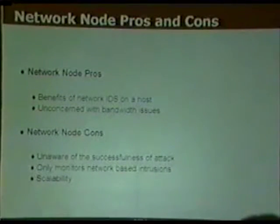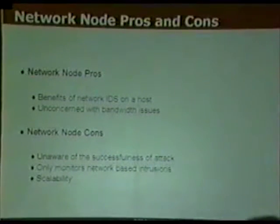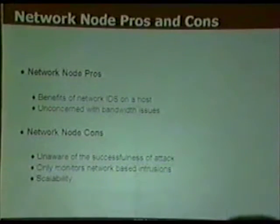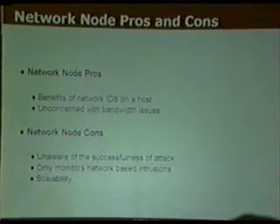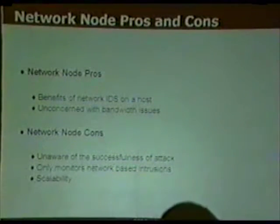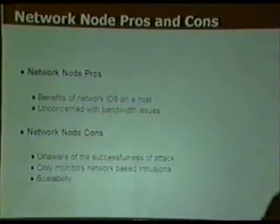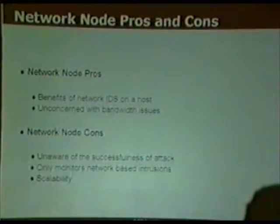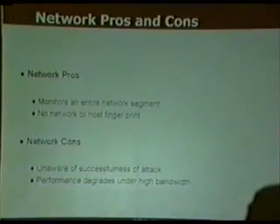The pros of network node IDS include getting network-level detection at the host and no bandwidth concerns since it's not watching the entire network. Depending on where encryption occurs in the stack, you may be able to work around some encryption. The cons are that it doesn't tell you the impact on the host — whether critical system files changed or whether the system is vulnerable — and there are scalability issues when deploying software on every host.